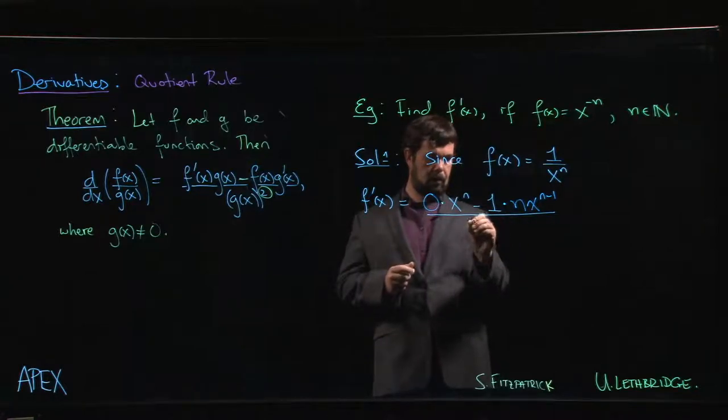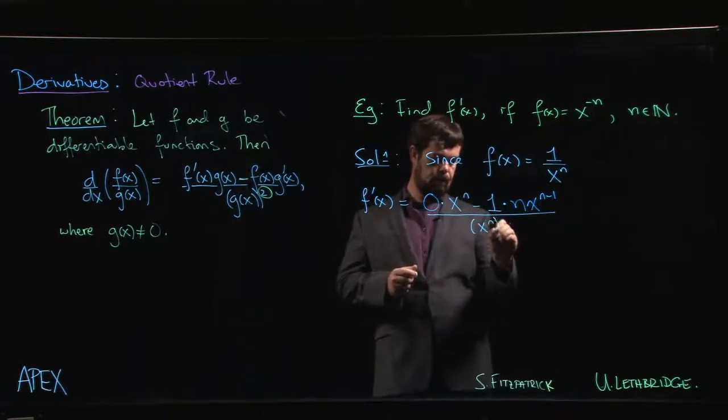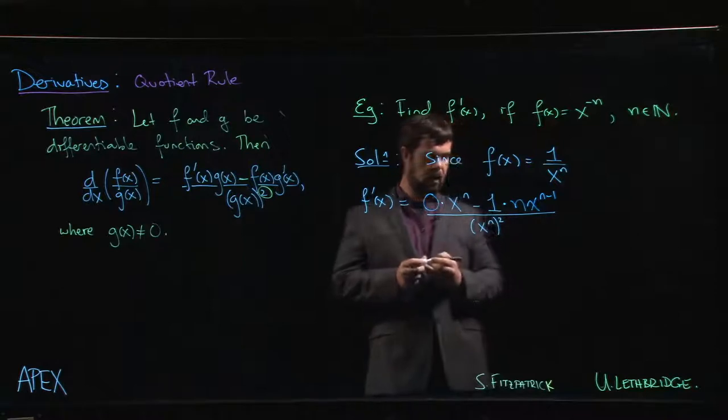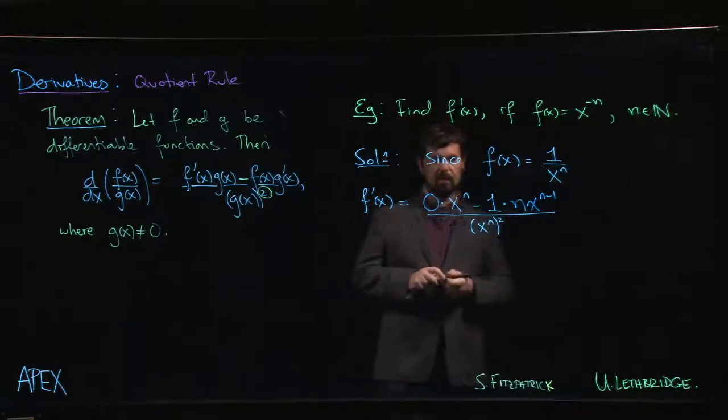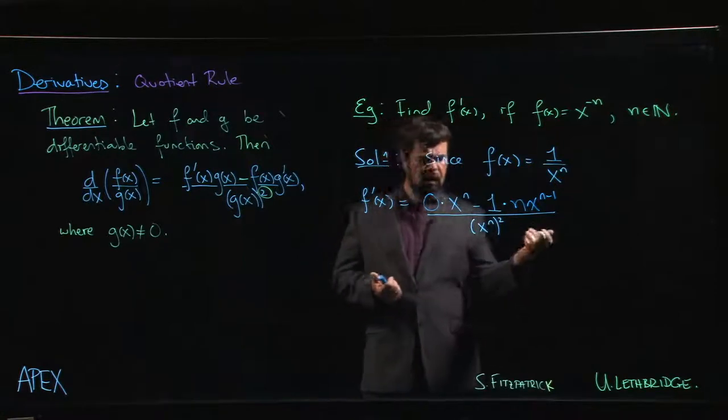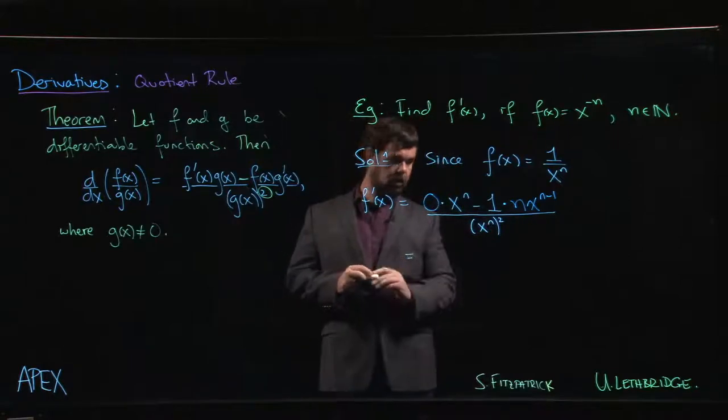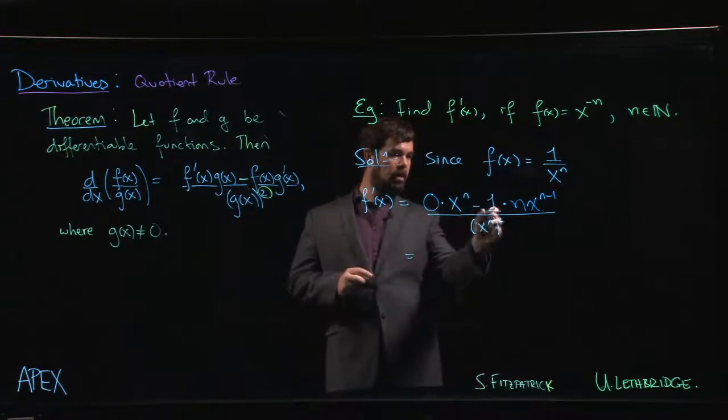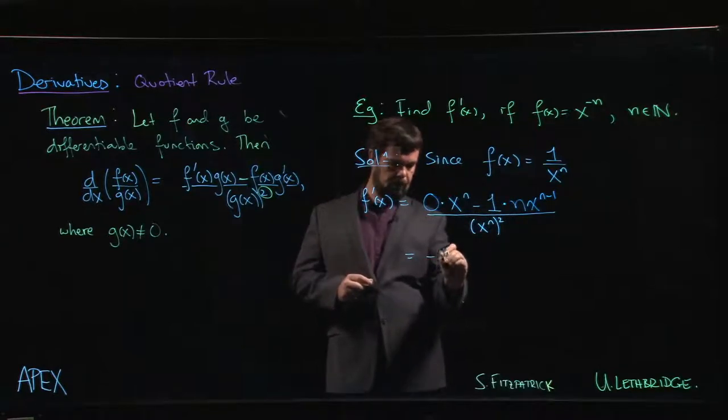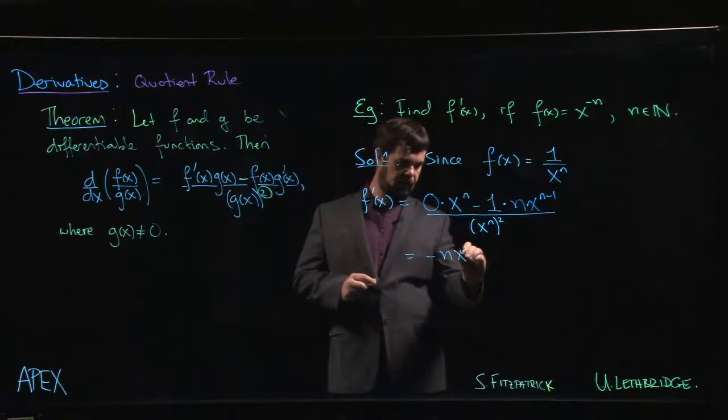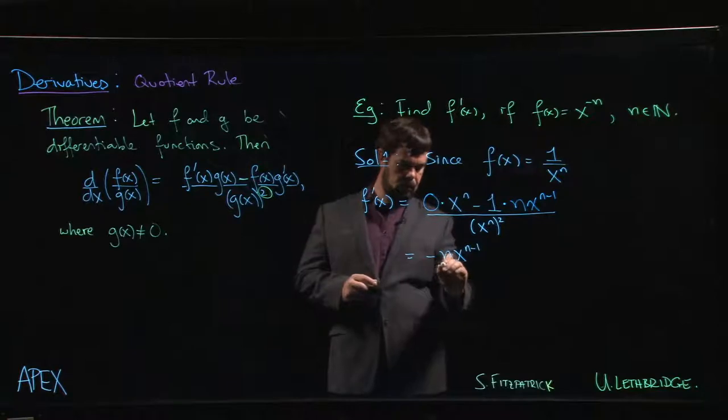So what does that give us? Let's do a bit of simplifying. This is a bit of a mess, we don't want to leave it like that. So minus 1 times n, that's just minus n. Minus n x to the n minus 1 over...